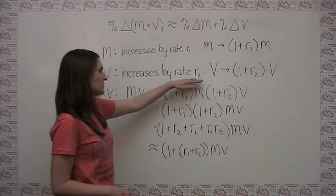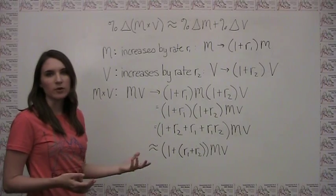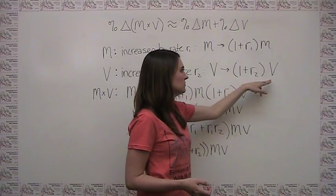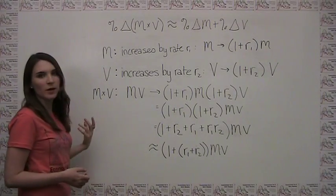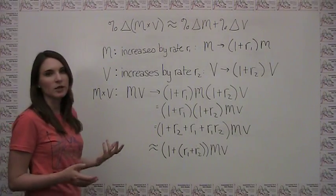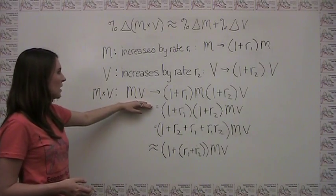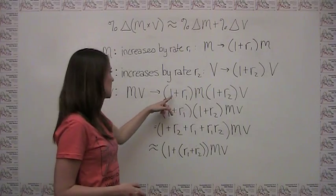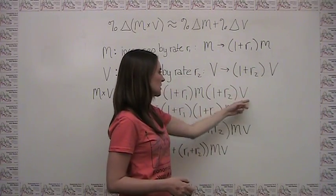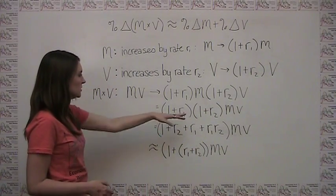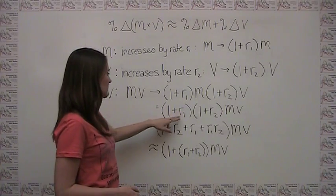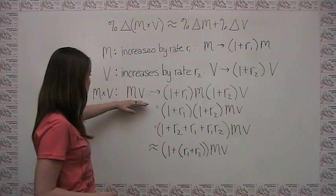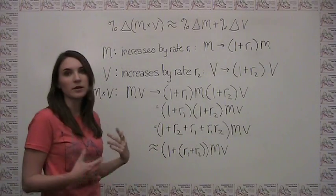Similarly, let's say that V increases by rate r2, again in decimal form rather than percentage form, so V turns into (1 + r2) times V. If we think about how M times V changes, we start with M times V and end up with (1 + r1) times M, multiplied by (1 + r2) times V. Rearranging, this is just (1 + r1)(1 + r2) multiplied by MV, which lets us focus on how the coefficient on what we started with is changing.